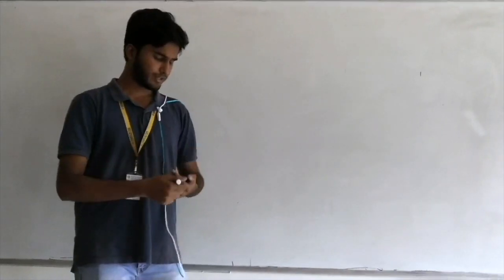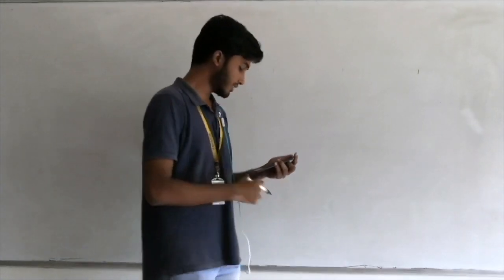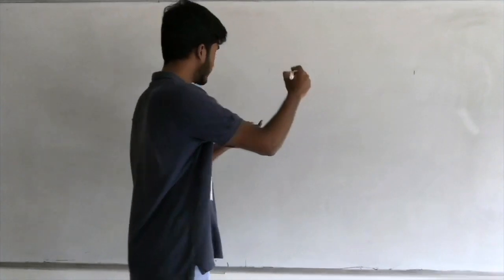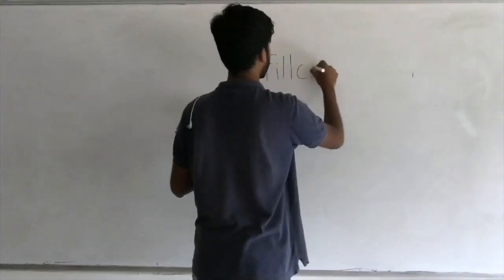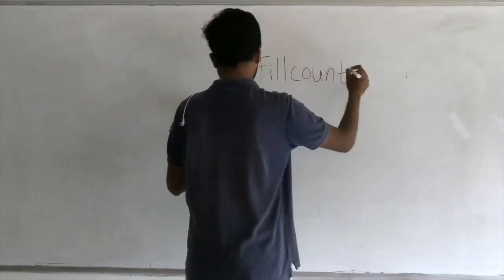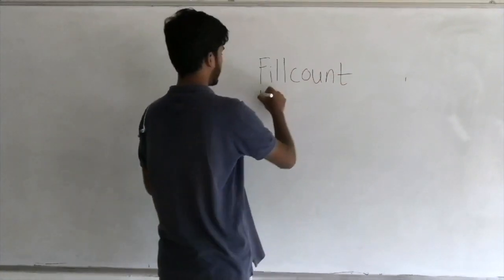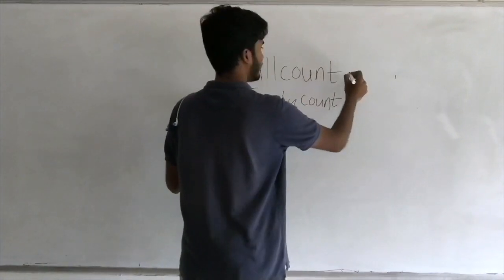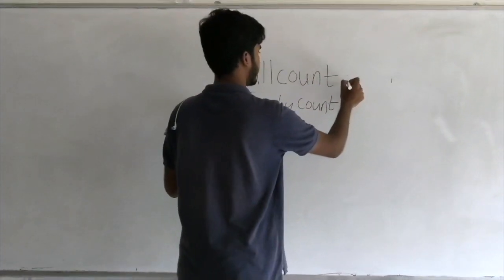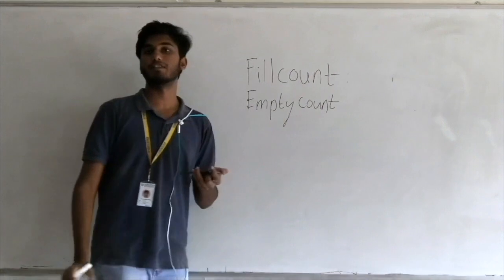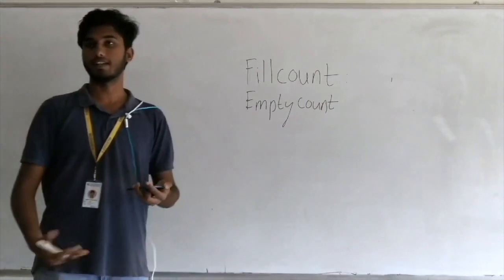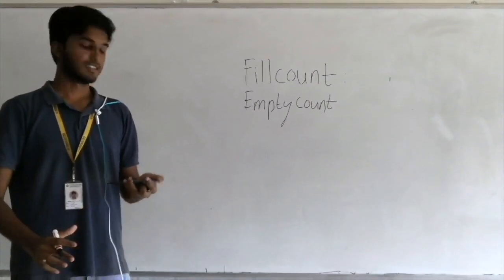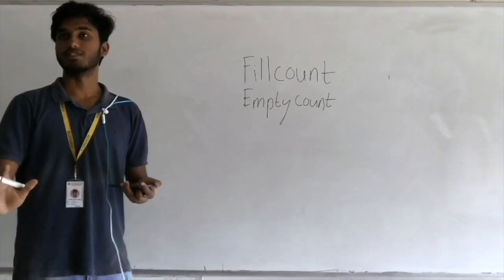We have two semaphores being used. One is named fill count — the number of items in the buffer that can be read, basically consumed by the consumer. The other is empty count — the number of empty spaces in the buffer.